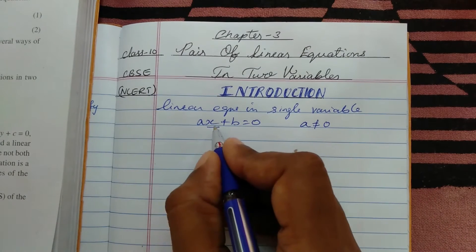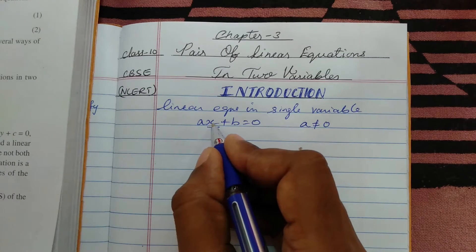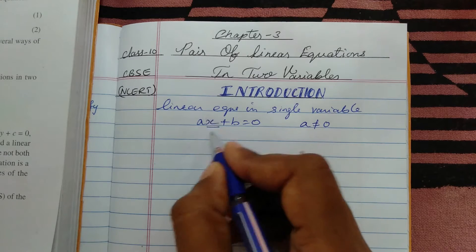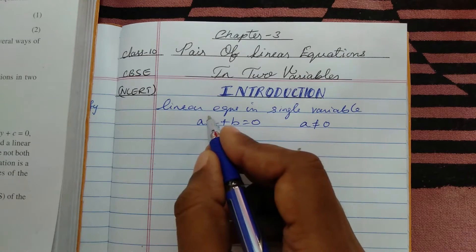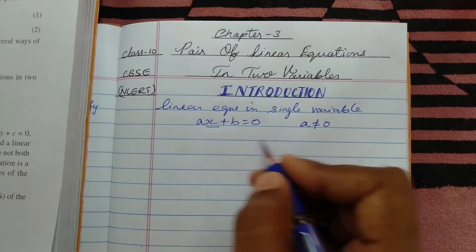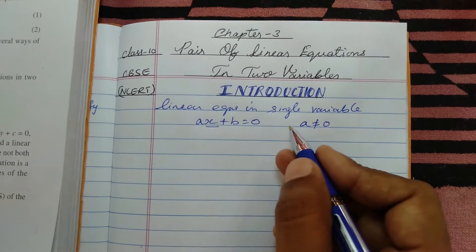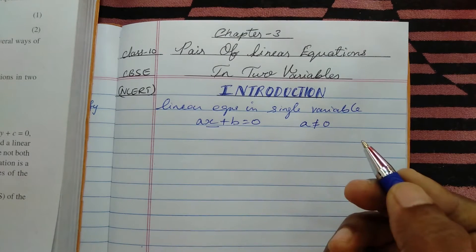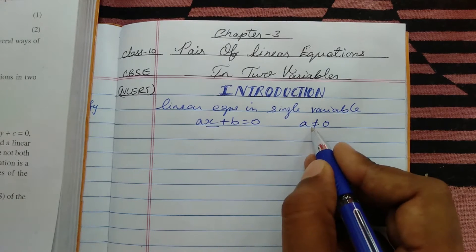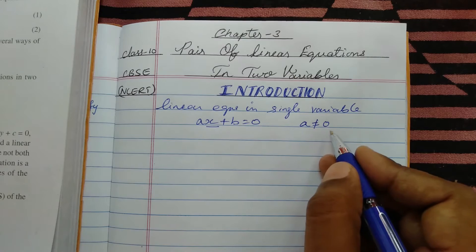One condition must be satisfied: a must not be equal to 0. If a equals 0, then the variable term vanishes and only the constant term remains, which does not make a valid equation. So a ≠ 0 is required.